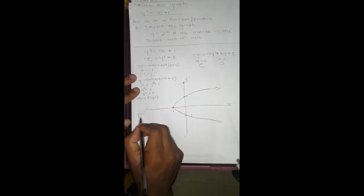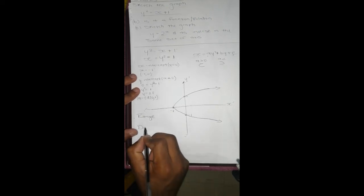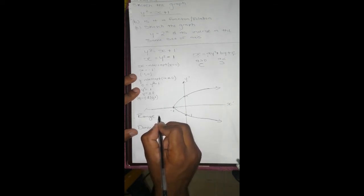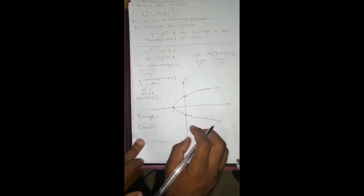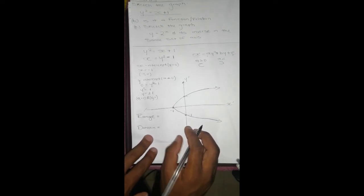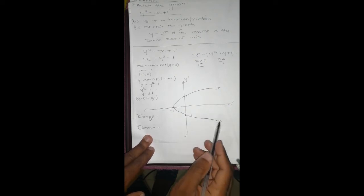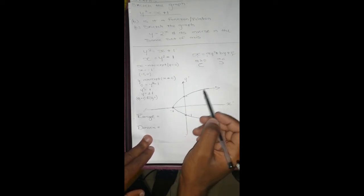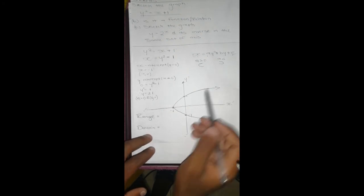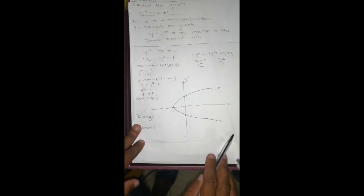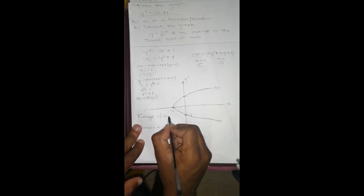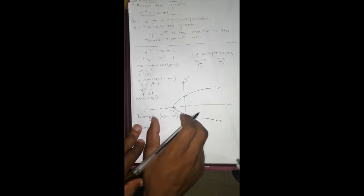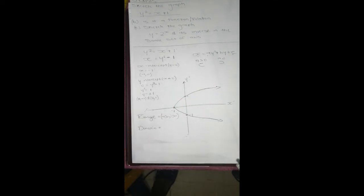Let's say we are asked to find the range and domain. Range is the y values for which our graph exists, and domain is the x values for which our graph exists. For the y values, it comes from the negative side down there, which is negative infinity, and goes to the positive side up there, which is positive infinity. So it's going to be negative infinity to positive infinity. And remember we do not include the infinities because we don't know where infinity is, it's just like a large number.